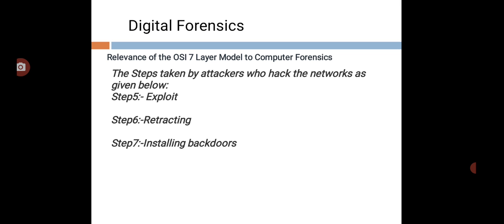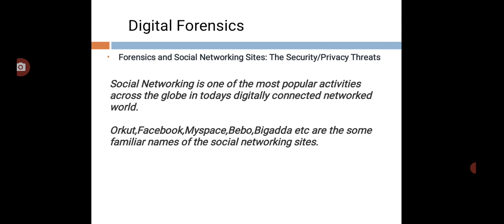To summarize, the seven network hacking steps are: foot printing, scanning and probing, gaining access, privilege escalation, exploiting, retracting, and installing backdoors. These are the concepts related to networking hacking steps. In the next lecture, we will discuss forensics and social networks, including security and privacy threats.